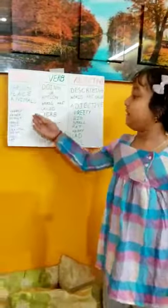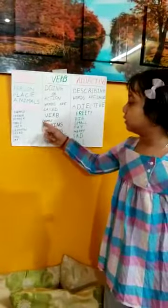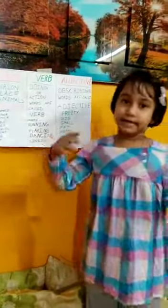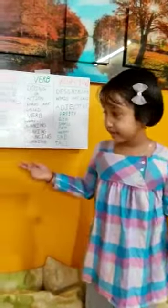Example: father, mother, table, chair, dog, cat, Lakhano, Deli. So now I will tell you about verb.